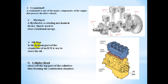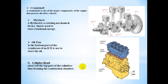Number six: the oil pan. The oil pan is the bottom part of the crankcase of the internal combustion engine (ICE). It is used to store the oil. All these parts belong to the cylinder block.